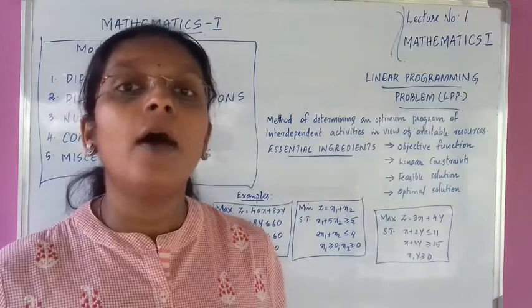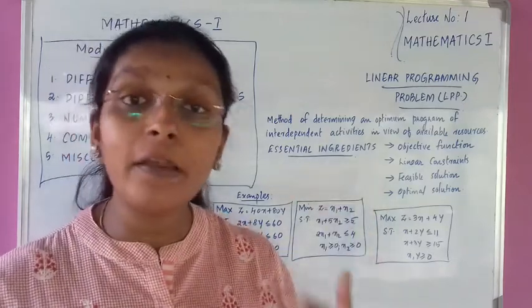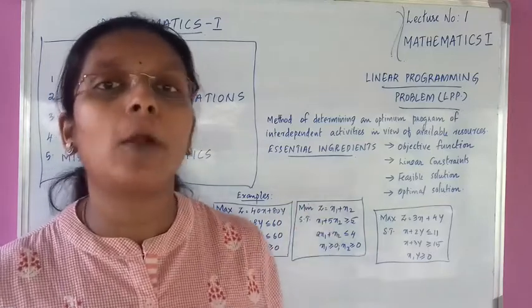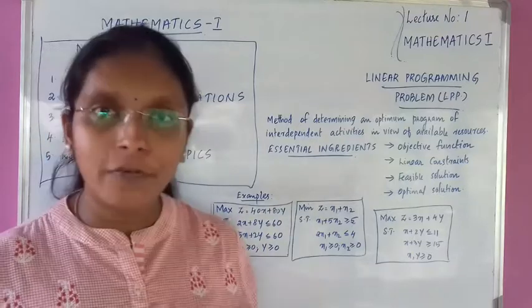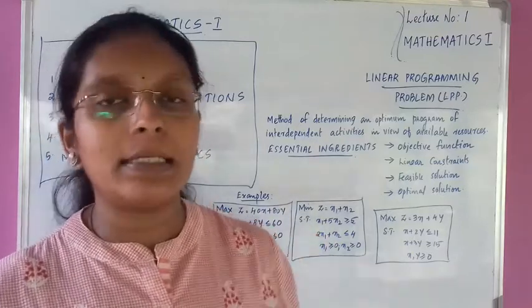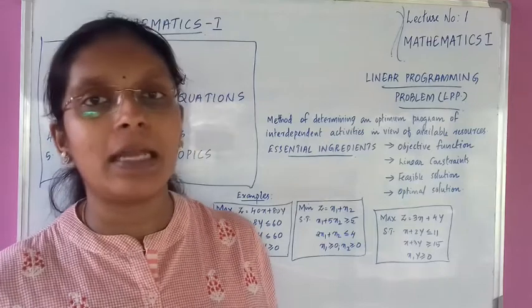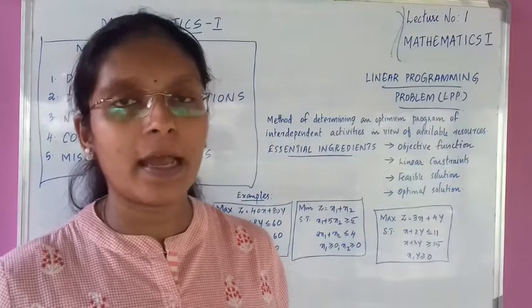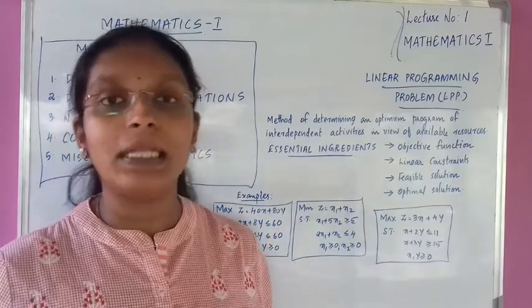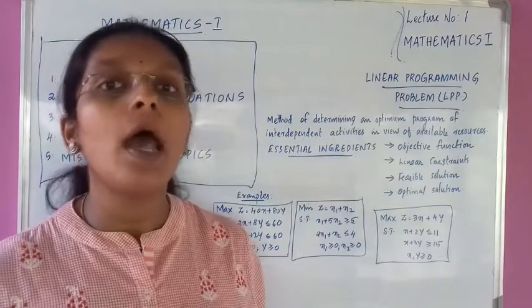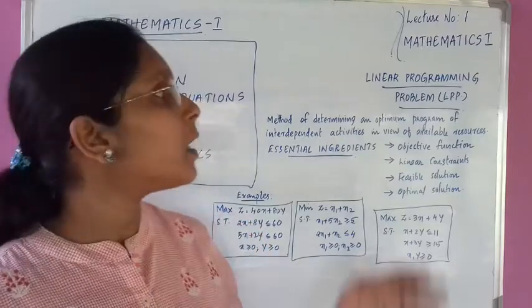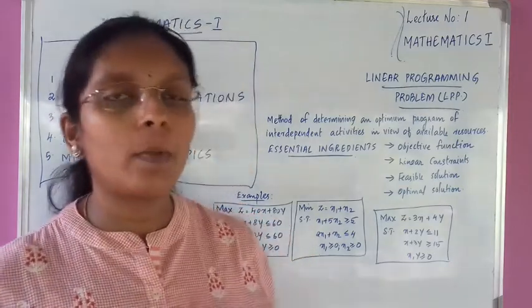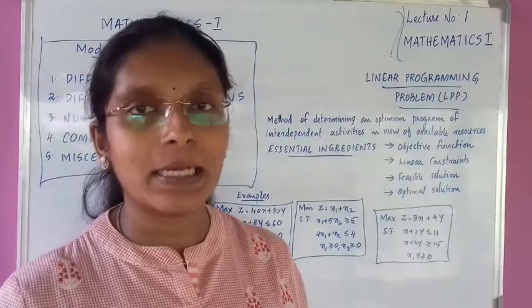For university questions, the first type is to identify the ingredients of an LPP — that is, identify the objective function and linear constraints. The second type involves solving using the graphical method to find the solution to the linear programming problem.